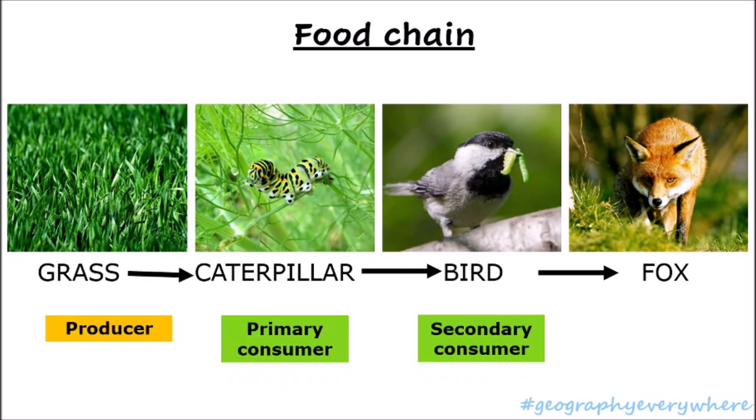The fox finally eats the bird. The fox is known as the tertiary consumer, because he is eating the bird, which has eaten the caterpillar, which has eaten the grass. So, that's a simple food chain: the grass moves on to the caterpillar, then the bird, which is finally eaten by the fox.